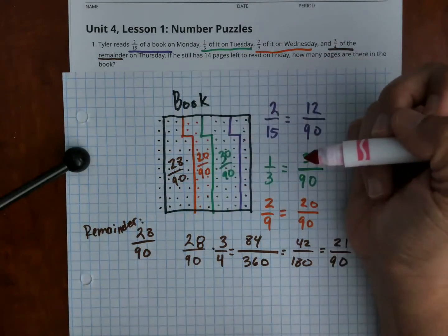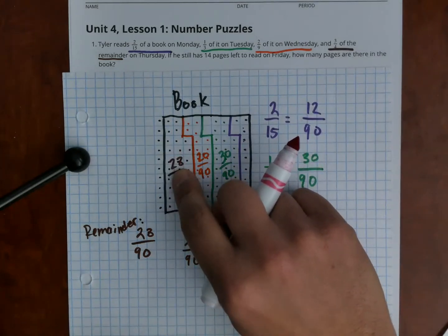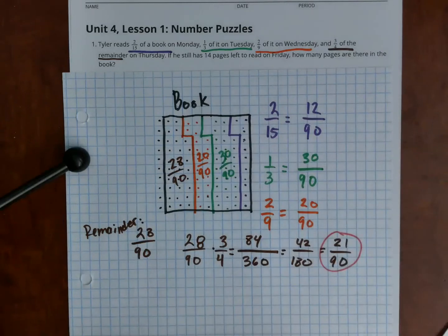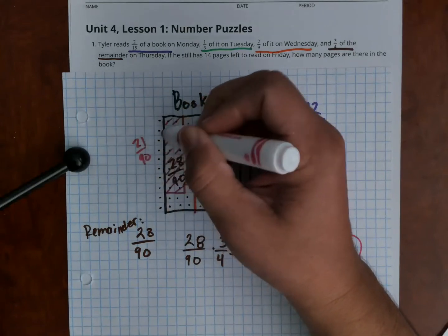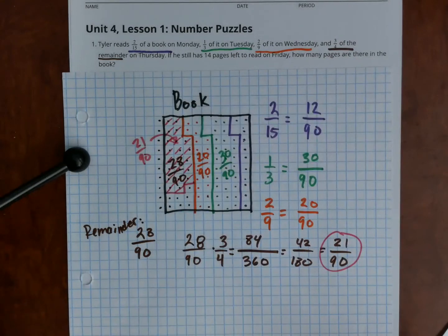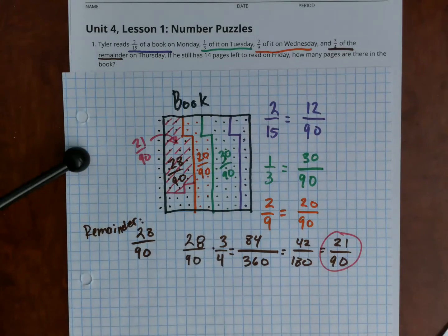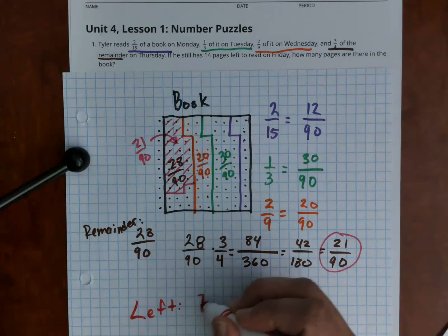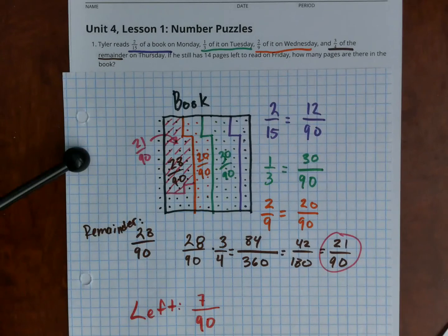Next I'm going to color-code and show what's left in the book. He read 21 out of 90 on Thursday, so I'll color that in pink. That's the 21 out of 90 he read on Thursday. How much has he not read? There are seven squares left — so 7 out of 90 remains.